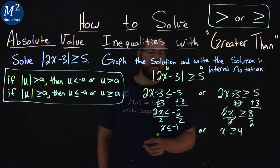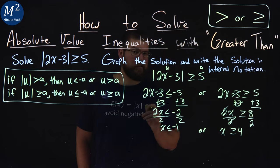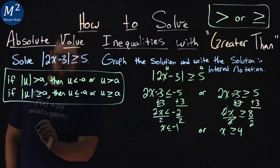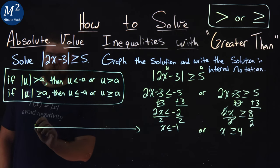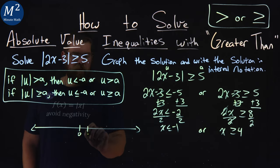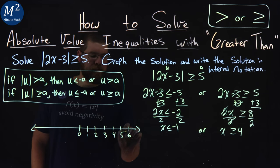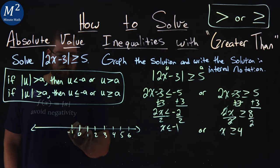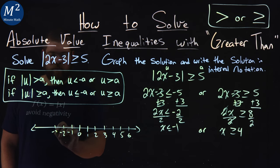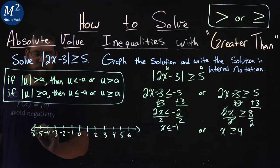So we have x is less than or equal to negative 1, or x is greater than or equal to positive 4, and we need to graph that solution. Let's create a number line right here. Let's make sure we encompass everything we need. Let's start at 0, then 1, 2, 3, 4, 5, 6, and negative 1, negative 2, negative 3, negative 4, negative 5, and negative 6 just to be balanced.